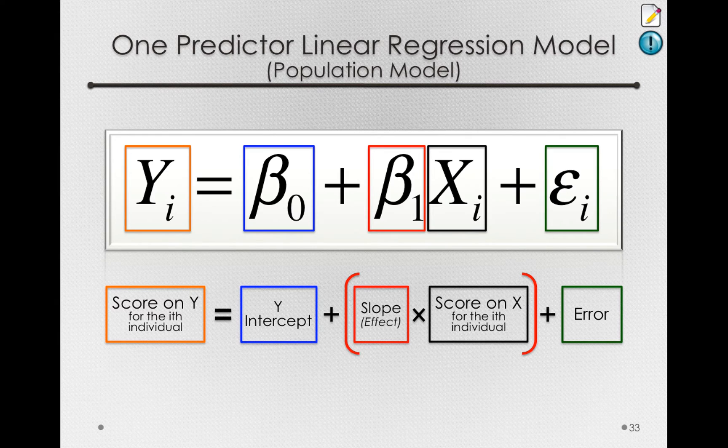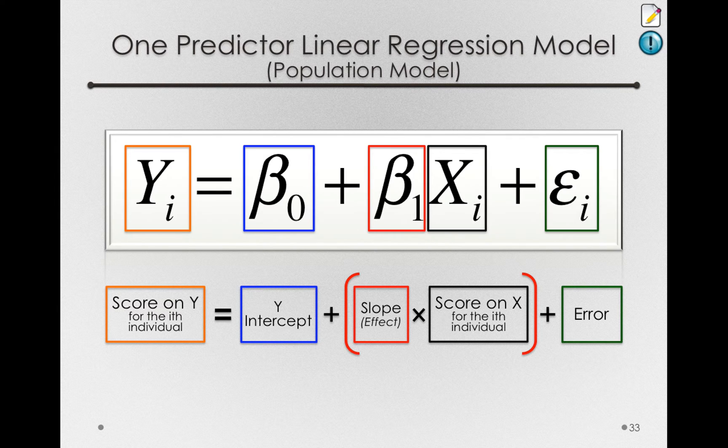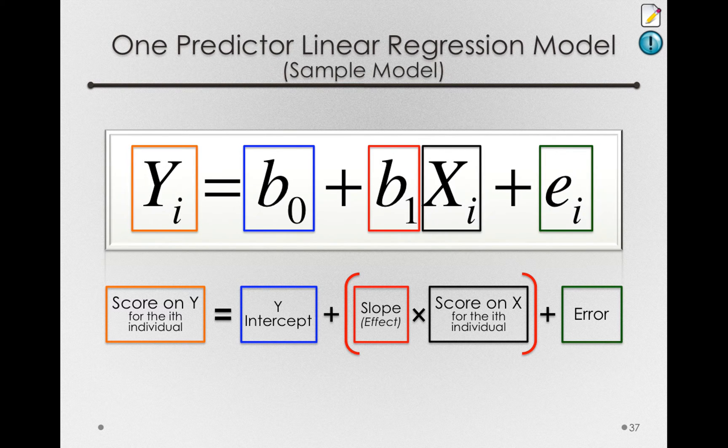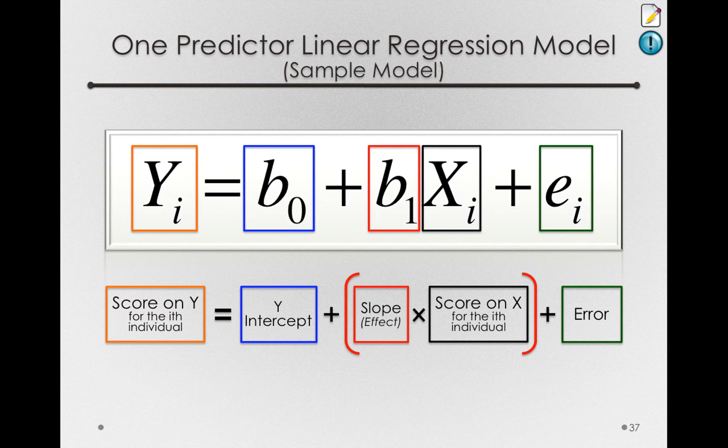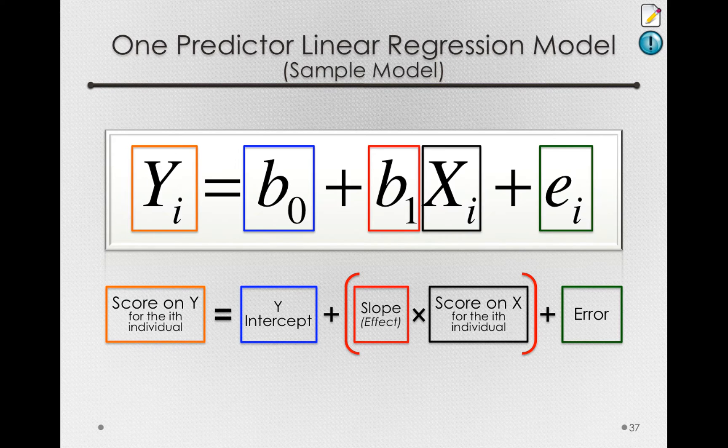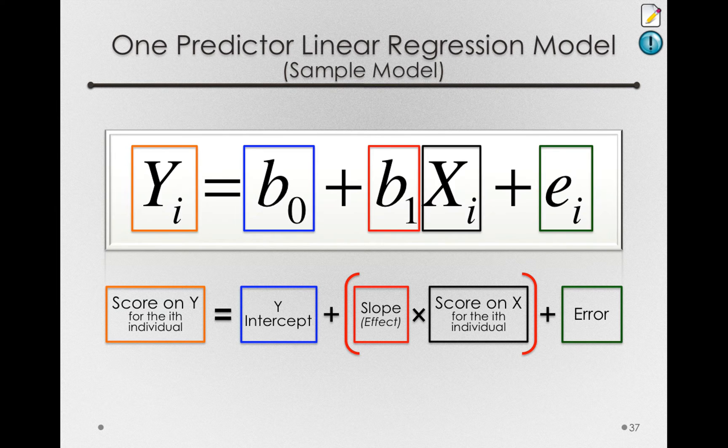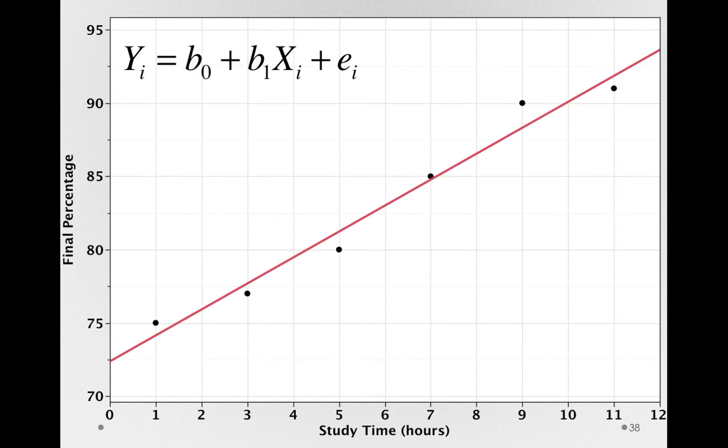Before we take a closer look at each of these model terms, note that this is our population model. When we take sample data and try to make an estimate of this population model, we won't be using betas. Instead, our model will be written as the y i, the score on y for the i-th individual, is equal to b sub 0 plus b sub 1, our slope, multiplied by X sub i, the score on x for the i-th individual, plus e sub i. Let's actually take a closer look at each of these components with our small sample of data.